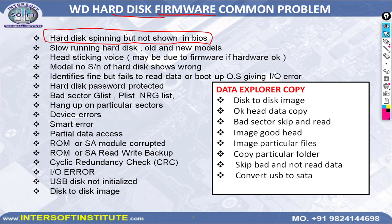Related firmware problems include: hard disk spinning but not showing in BIOS, slow running hard disk — if the hard disk health and heads are okay but firmware bugs cause it to run slow, we repair those firmware bugs to make it run fast. Head clicking or ticking may also be due to firmware. We first check firmware; if firmware is okay, we go to hardware.